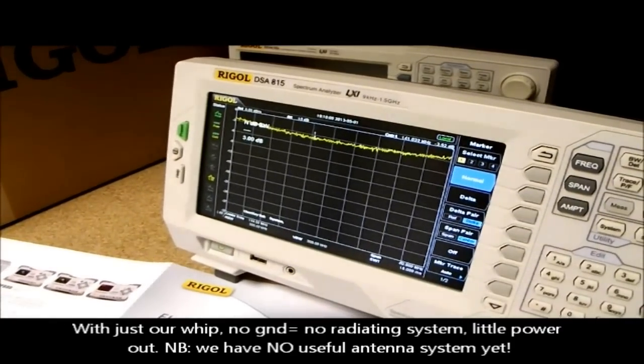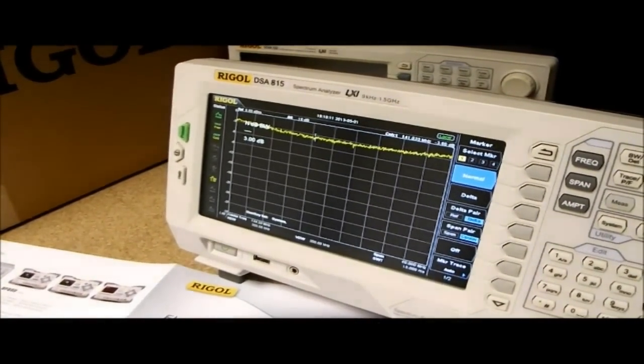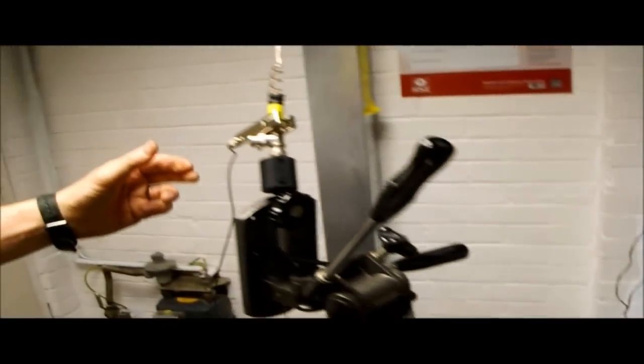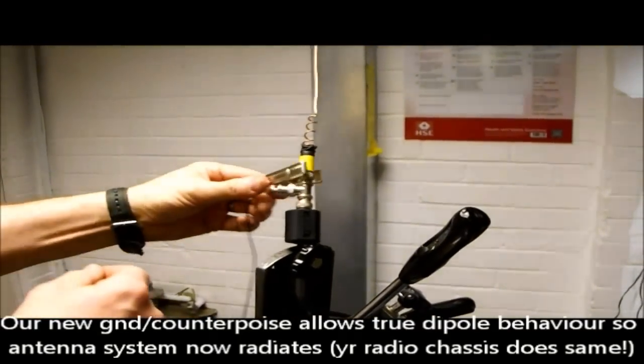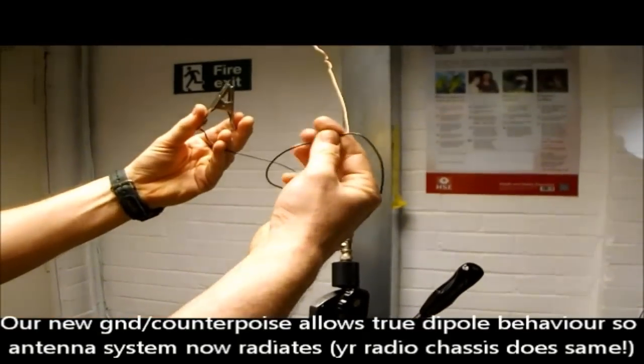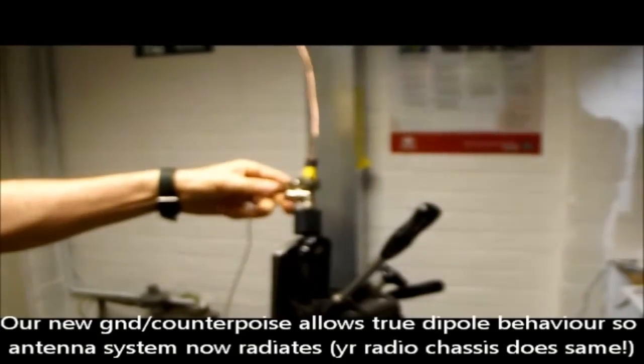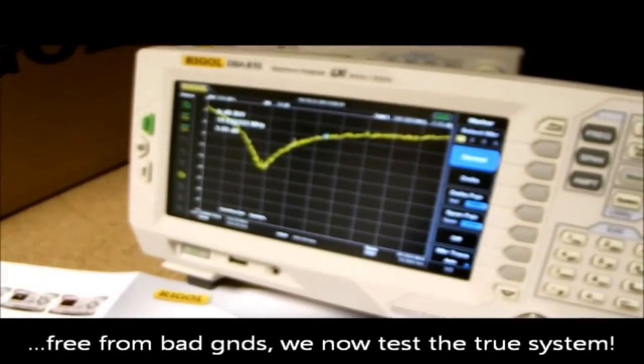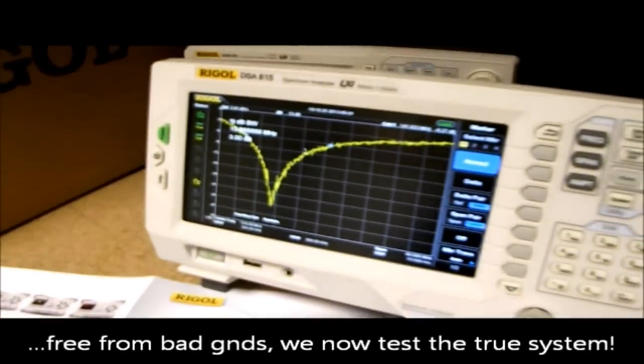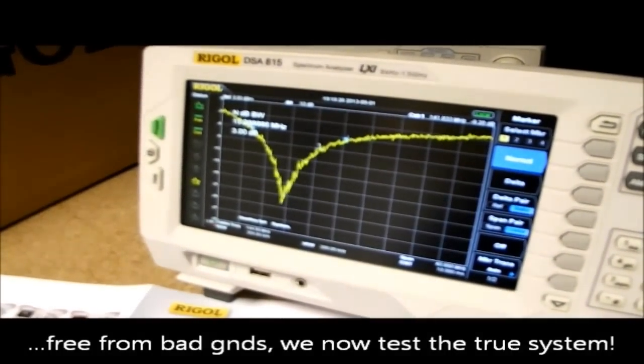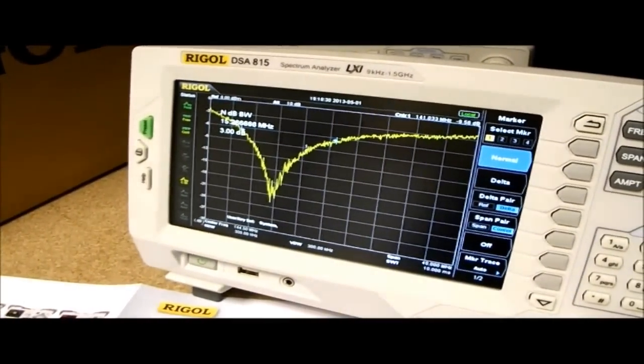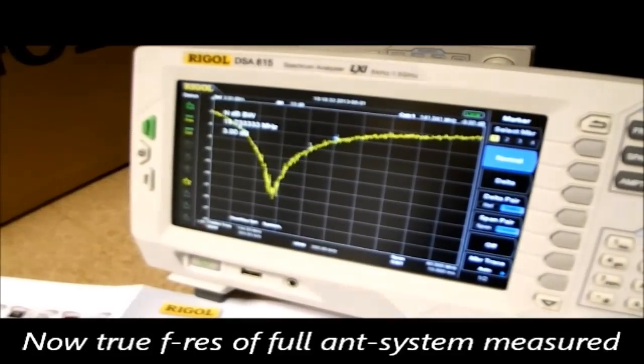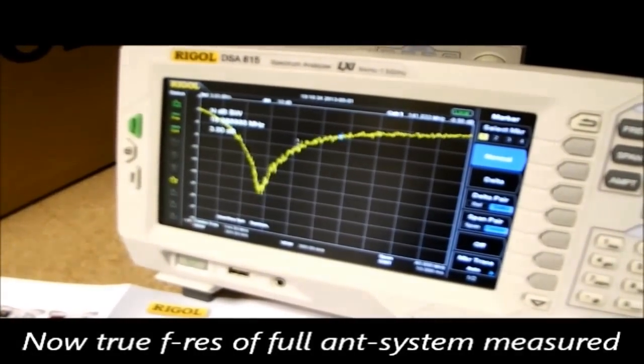What I'm now going to do is to attach a proper ground plane to the antenna system. So all I've done is to clip a piece of resonant wire onto the antenna system. Now if we look at the trace, you can see that there's a very clear resonance. But the resonance is at about 135 MHz instead of 141 MHz. And that is the accurate resonance for that antenna.